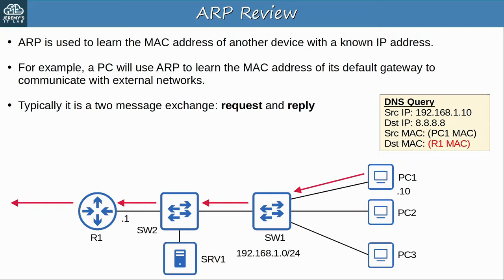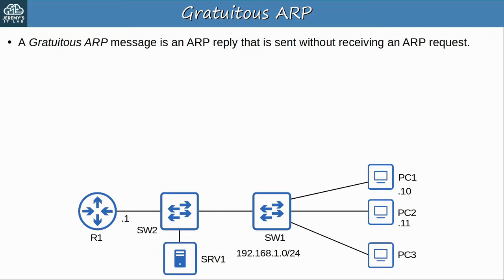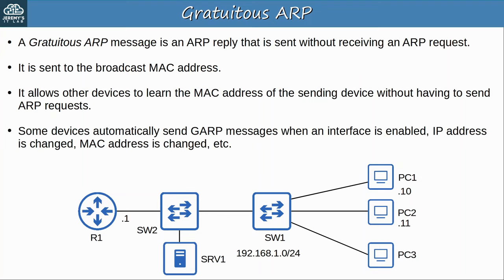So PC1 is now able to insert R1's MAC address as the destination MAC of its DNS query, and then send the message to R1, which will forward it over the Internet. That's the basic ARP process. But there is also something called gratuitous ARP. A gratuitous ARP message is an ARP reply that is sent without receiving an ARP request. It is sent to the broadcast MAC address — all Fs. Note that standard ARP replies are not broadcast; they are unicast messages sent to the device that sent the ARP request.